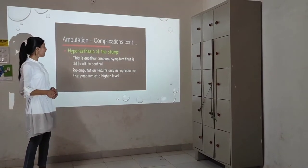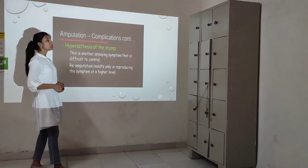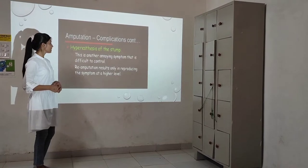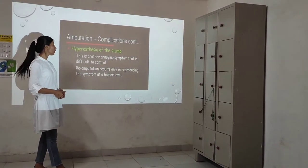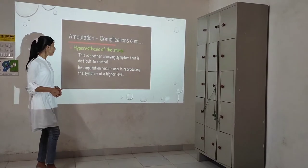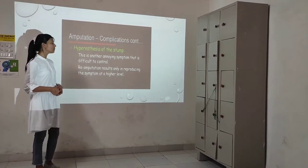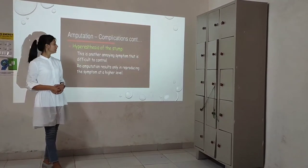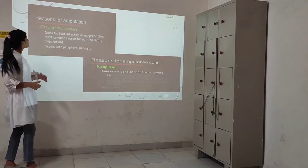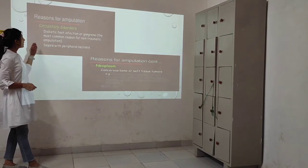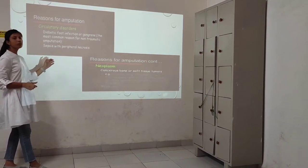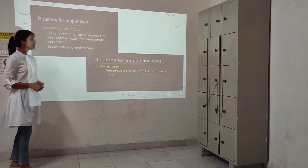Another complication is hyperesthesia of the stump, which is a difficult symptom to control. Re-amputation results only in reproducing the symptoms at a higher level. Reasons for amputation include circulatory disorders, diabetic foot infections or gangrene, and sepsis with peripheral necrosis.